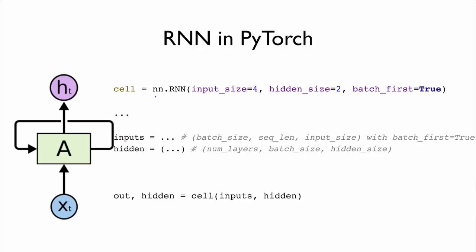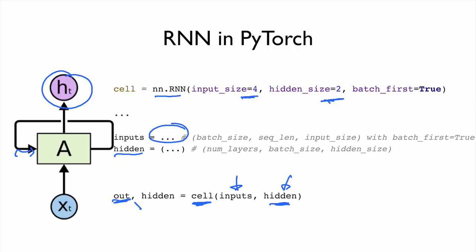Let's use RNN as an example. Input size is 4 and hidden size is 2. That means each input has a vector size of 4, and the output will be a vector of size 2. We make some inputs, and because RNN requires an initial hidden input, we provide that, then feed both the input and hidden to the cell. The cell produces an output and a new hidden.